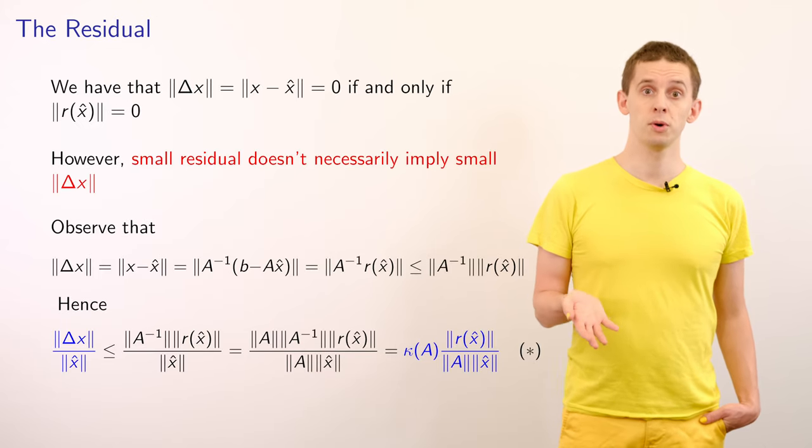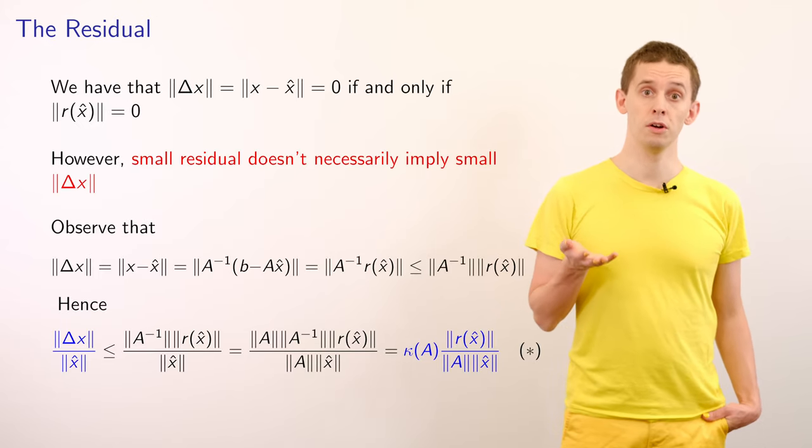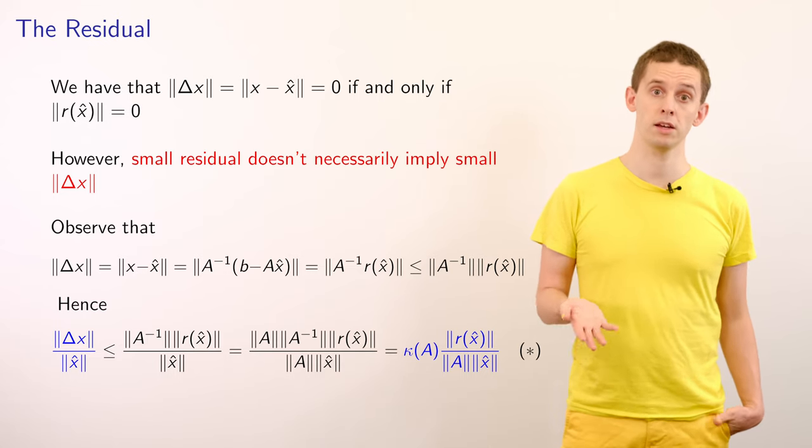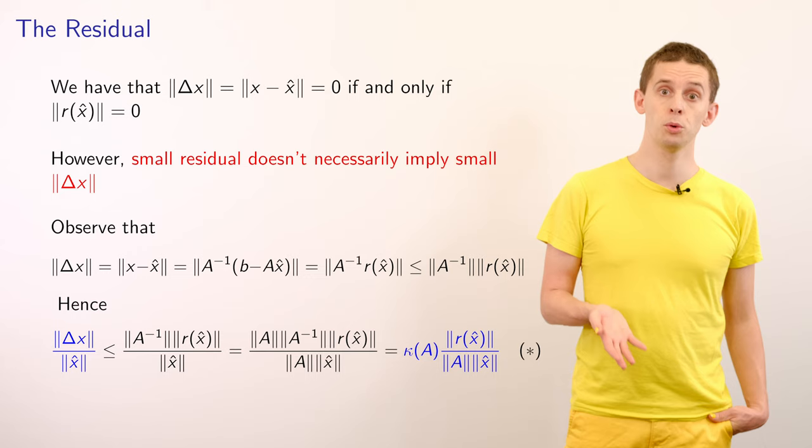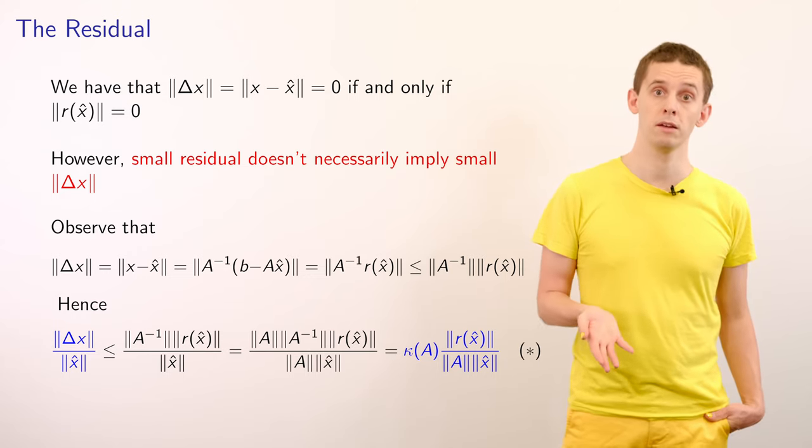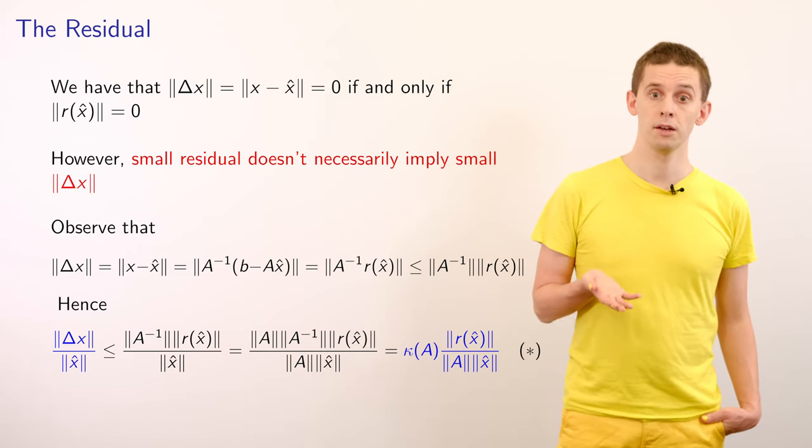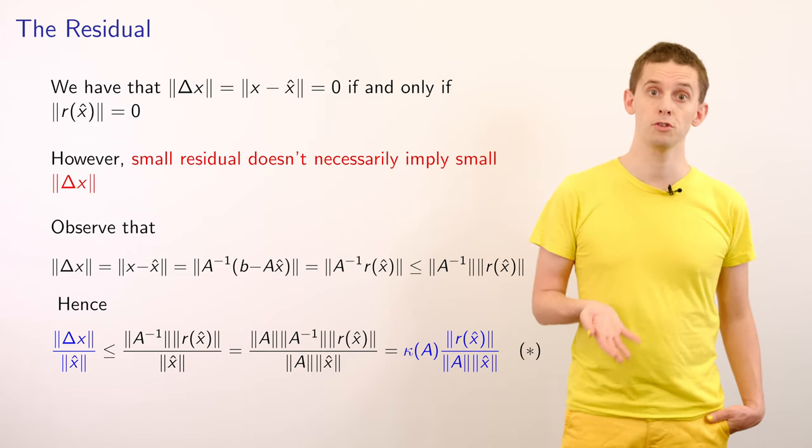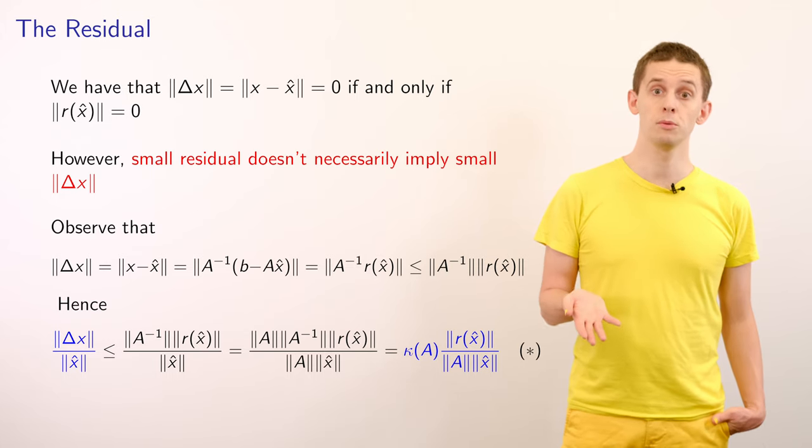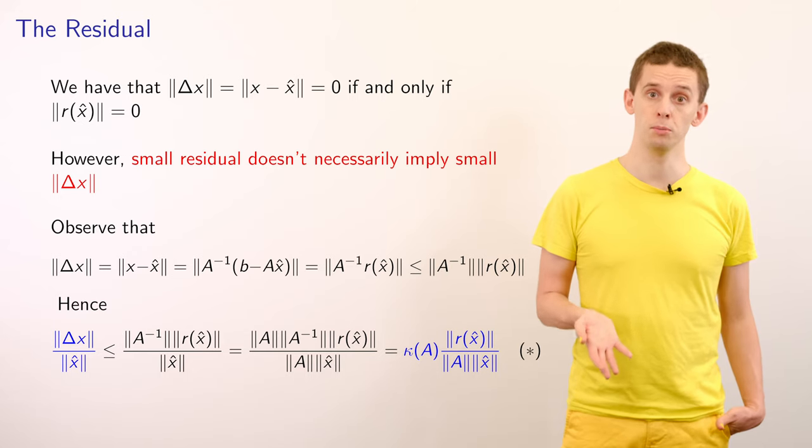So now let's write out an expression for the norm of Δx. This is equal to the norm of x minus x̂, and that's equal to the norm of A inverse applied to b minus A of x̂, and that is the norm of A inverse multiplied by r(x̂). And that will be less than or equal to the norm of A inverse multiplied by the norm of r(x̂).